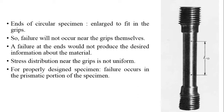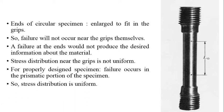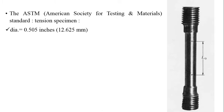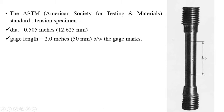For a properly designed specimen, failure occurs in the prismatic portion — within the gauge length L0 — so that the stress distribution is uniform and the bar is subjected only to pure tension. The ASTM standard specifies that the diameter is 0.505 inches (approximately 12.625 mm) and the gauge length L0 is 2 inches (approximately 50 mm) between the gauge marks.